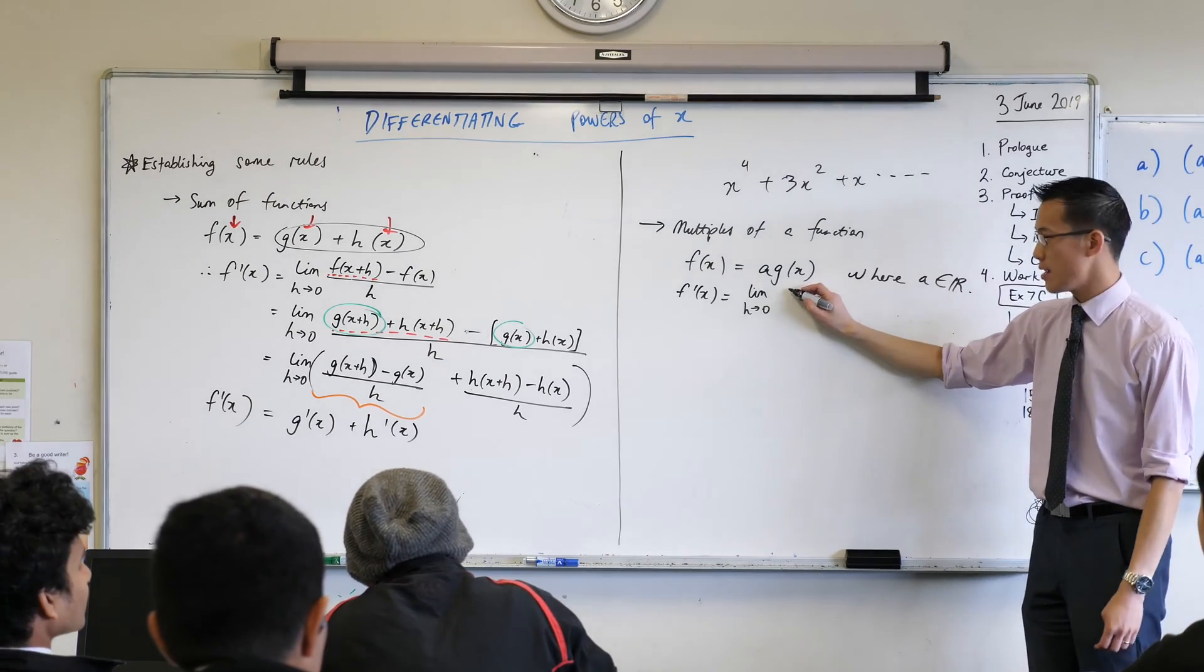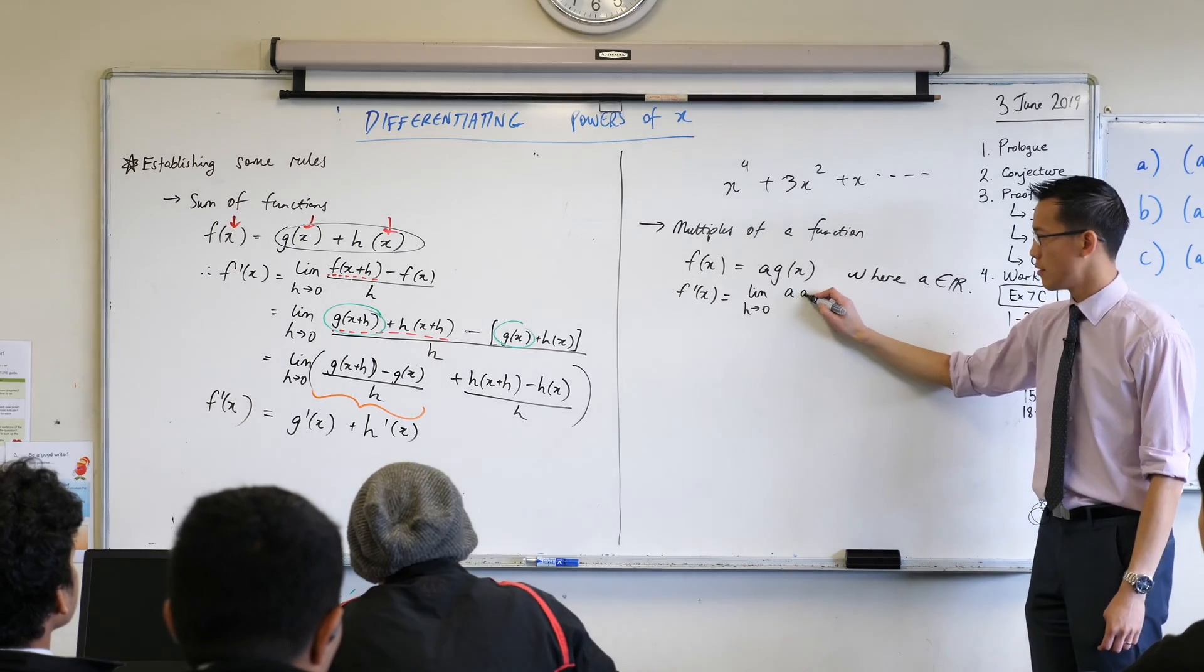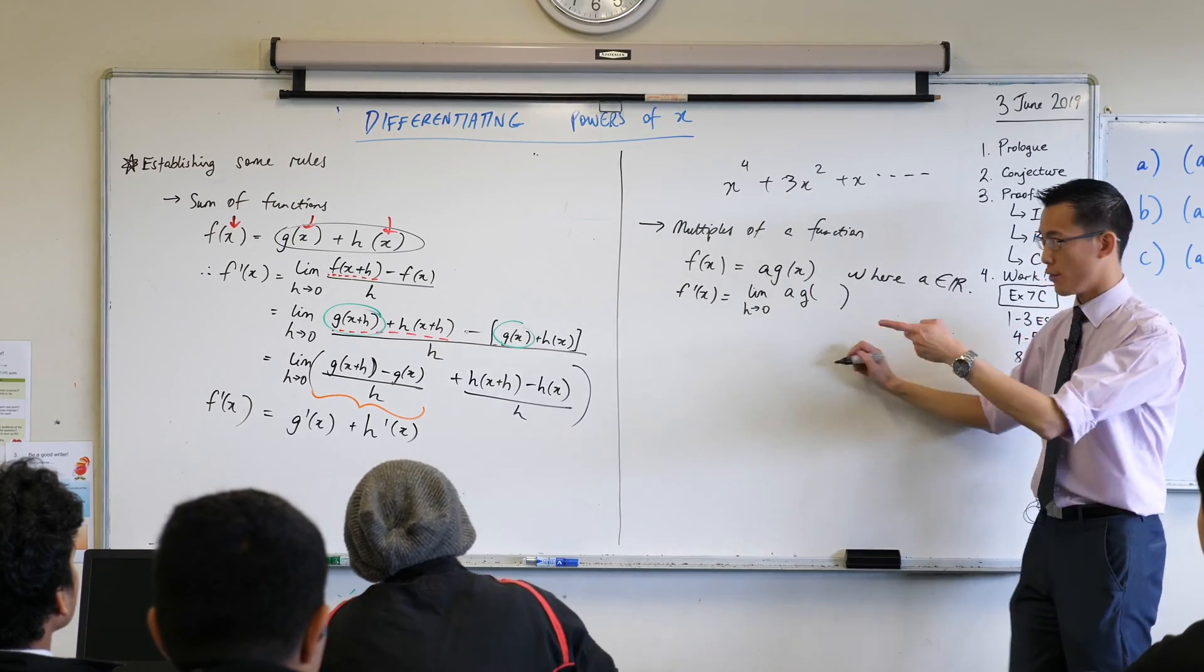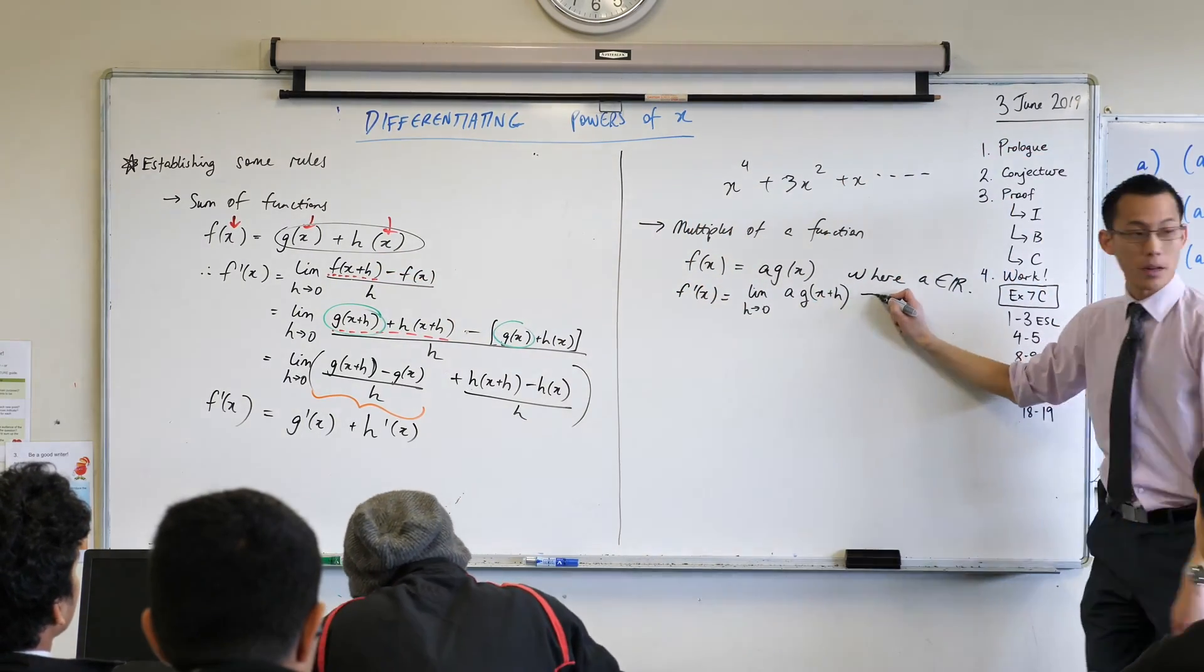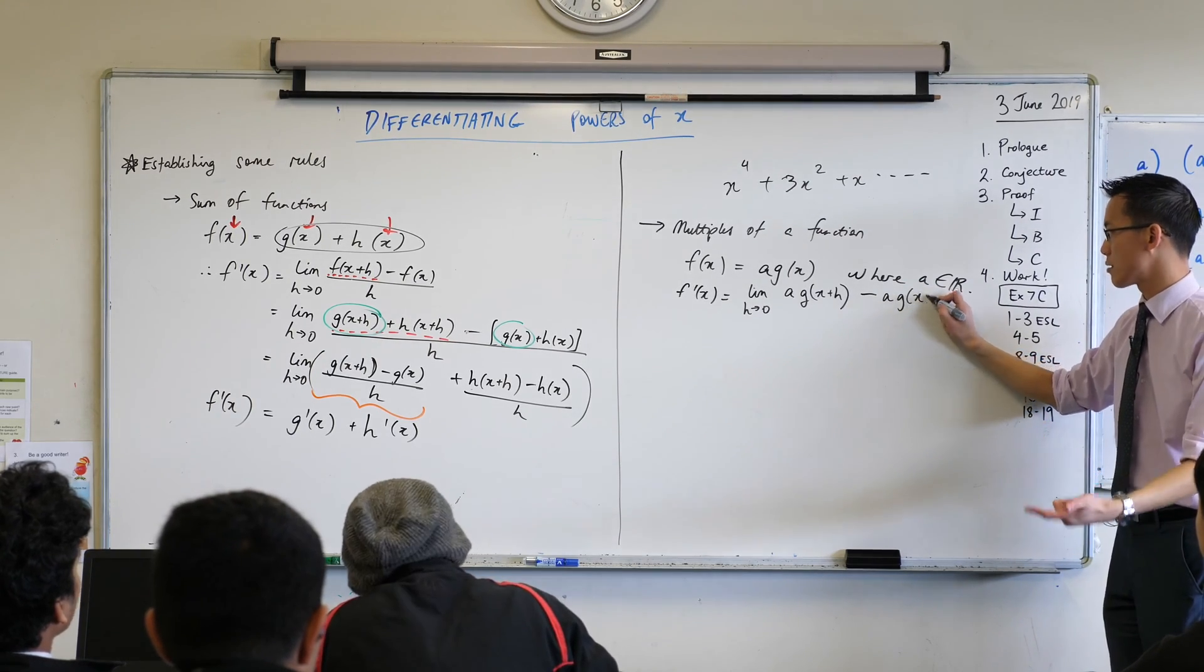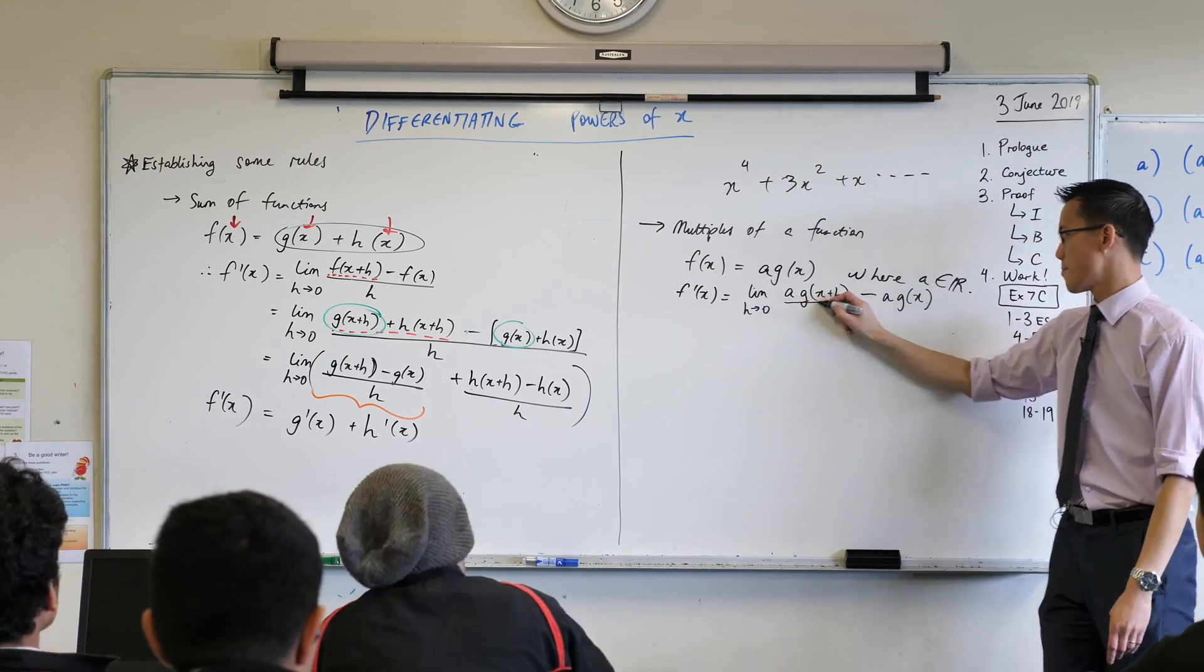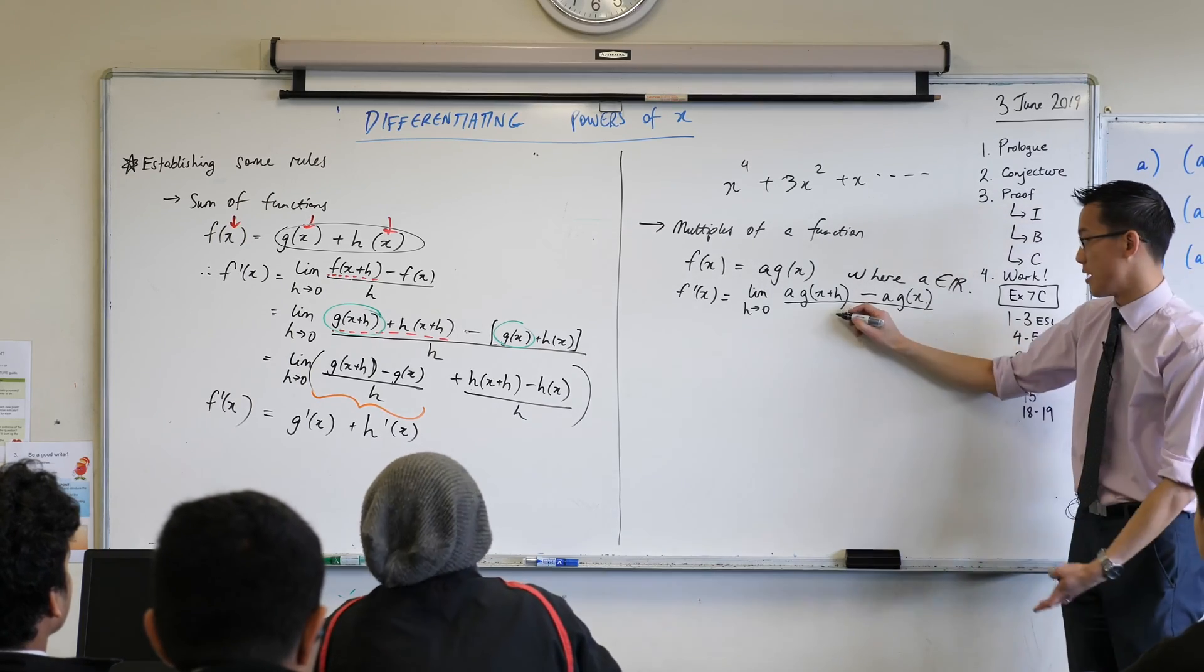So the first thing will be a times what? What's going to be in here? Have a look. We always start with the higher value, right? So it's x plus h. And then I'm going to subtract a, that's just the constant, times g of x. There's the lower value. Upper value, lower value. What's on the denominator? h. It's always h on the denominator, isn't it?